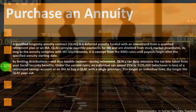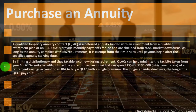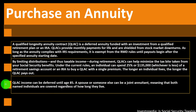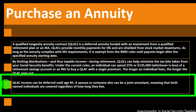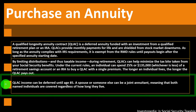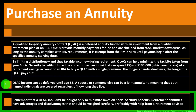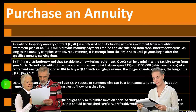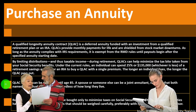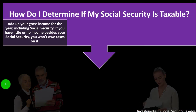The longer you live, the better the QLAC deal becomes, since payments continue for life. QLAC income can be deferred until age 85, and a spouse or joint annuitant can be named, meaning both individuals are covered regardless of how long they live. Remember, a QLAC shouldn't be purchased solely to minimize Social Security taxes — retirement annuities have advantages and disadvantages that should be weighed carefully, preferably with help from a retirement advisor, considering your full picture: longevity, personal circumstances, current income, and required minimum distributions.